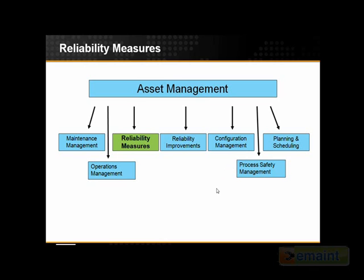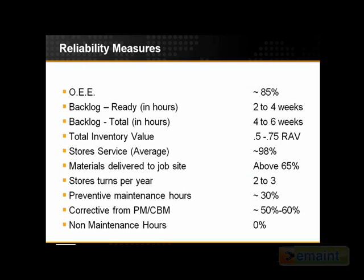So with that, let's get into the actual measures. The first one is overall equipment effectiveness, or OEE. I'm going to give you each measure, talk about what it's actually measuring and how to go about that, and give you a target that would be considered world class. OEE is basically looking at the time losses, speed losses, and quality losses in your operation. It's aimed at manufacturing, and 85% is a great target for OEE.